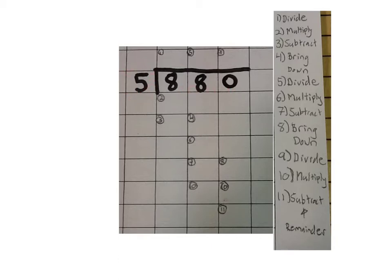5 is our divisor. This number here is the most important number. It is the number that we're always going to be dividing and multiplying by. So our first step, step 1, divide. We're going to divide 8 by 5.